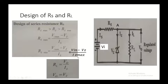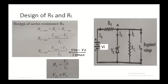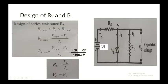We know that VO equals IL times RL, so RL equals VO divided by IL. Since VO equals VZ, from these two equations we can design the values of RS and RL.